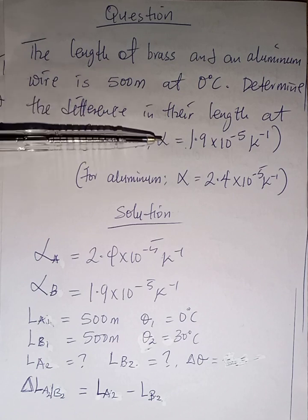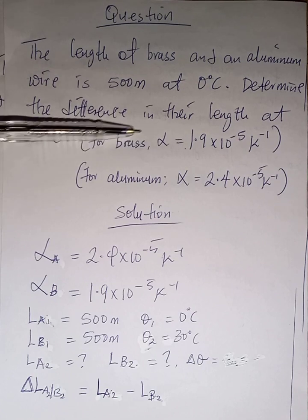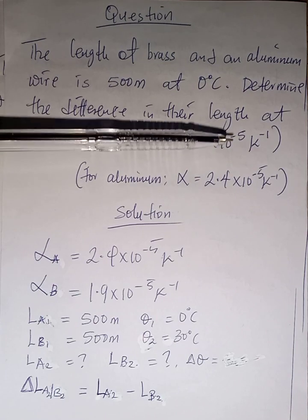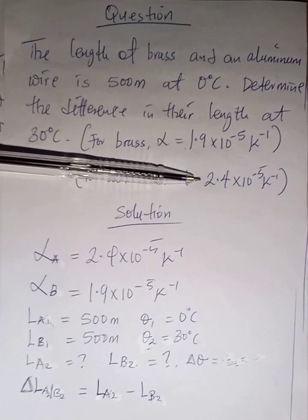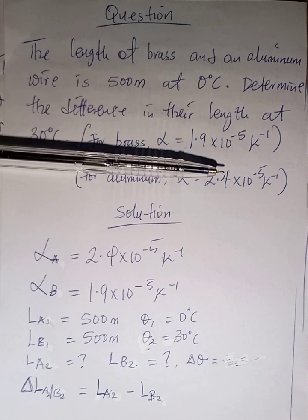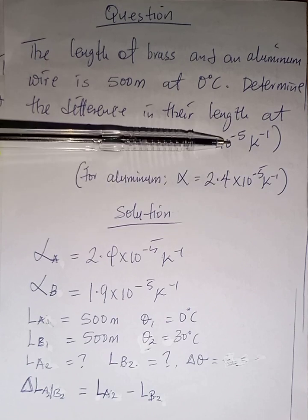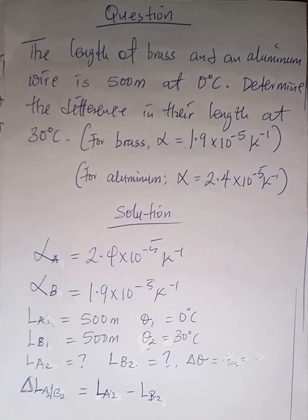They give us alpha, the coefficient of linear expansivity. For brass, alpha is 1.9×10⁻⁵ per Kelvin. For aluminium, alpha is 2.4×10⁻⁵ per Kelvin. So alpha for brass is 1.9×10⁻⁵ and for aluminium it is 2.4×10⁻⁵.